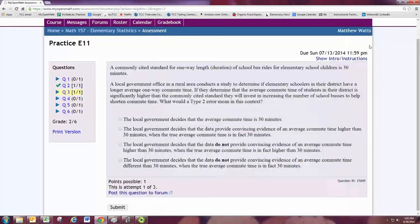In this video, we'll see how to do Problem 3 from Experience 11. A commonly cited standard for one-way length duration of school bus rides for elementary school children is 30 minutes. A local government office in a rural area conducts a study to determine if elementary schoolers in their district have a longer average one-way commute time. If they determine that the average commute time of students in their district is significantly higher than the commonly cited standard, they will invest in increasing the number of school buses to help shorten commute time. What would a type 2 error mean in this context?